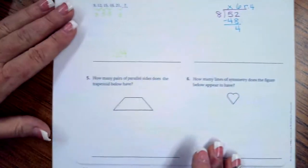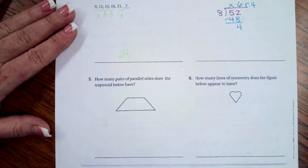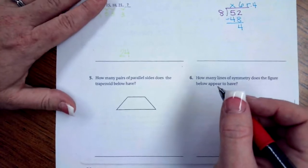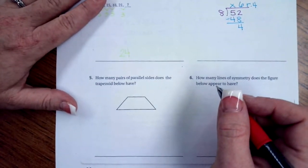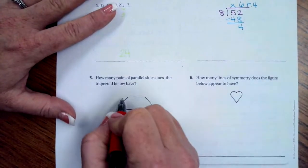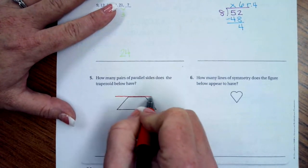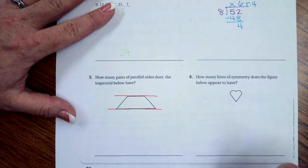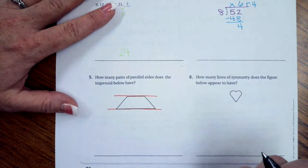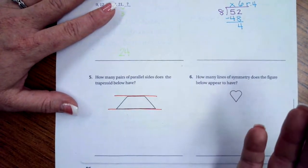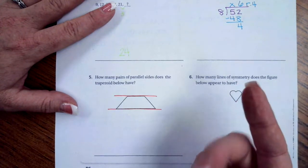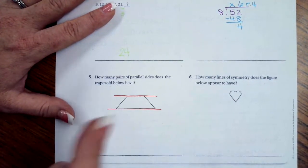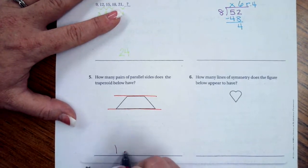We're going to go down to number 5, and it says, how many pairs of parallel sides does the trapezoid below have? Well, the only set of pairs that it has are these two lines right here. And it says, how many pairs? So, if you have like a pair of shoes, that's one pair, but you have two shoes in it. These are two lines, but that only makes one pair. So, one pair.